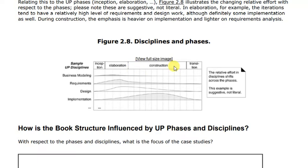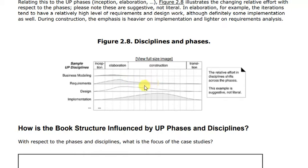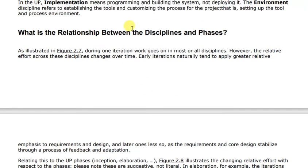The relationship between disciplines and phases is shown in a diagram. In every phase we can see how much effort goes into Business Modeling, Requirements, Design, and Implementation. In Elaboration, there is a lot of Business Modeling and Requirements work focused on design. In Construction, the emphasis shifts to implementation.